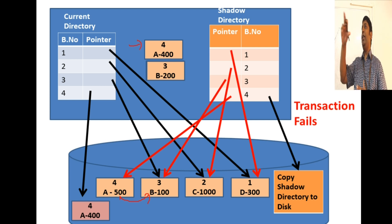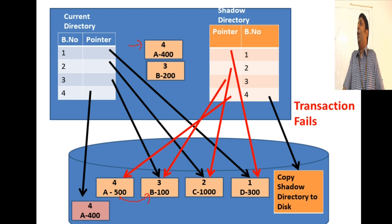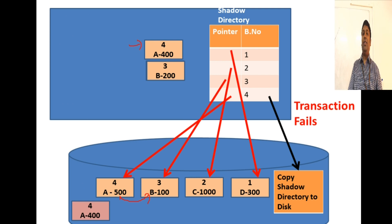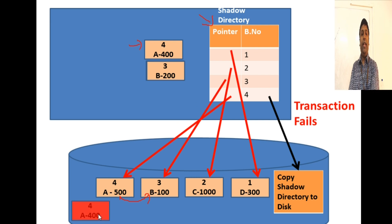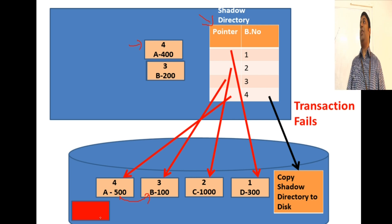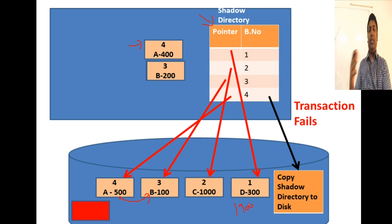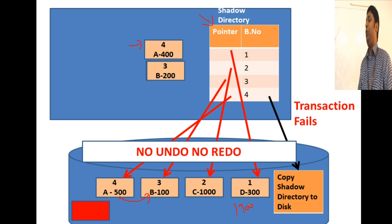When the transaction fails, we need to roll back all changes and return to the previous consistent state. The recovery step is very simple: just discard the current directory and reinstate the shadow copy. The shadow directory points only to the old pages, and anything not pointed to by the shadow directory is deallocated. Immediately the database returns to the previous consistent state with a sum of 1900 - nothing to undo or redo. This technique is called no-undo, no-redo in recovery.